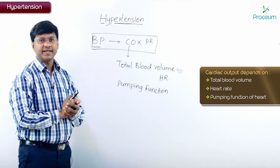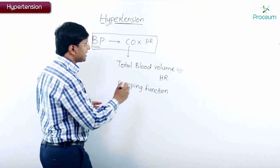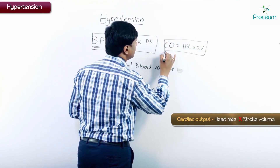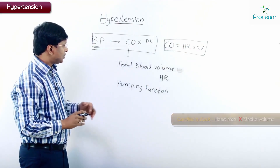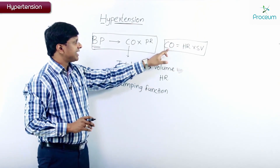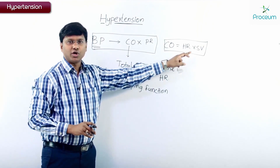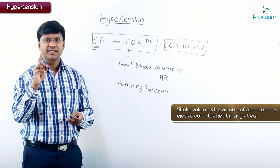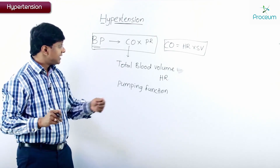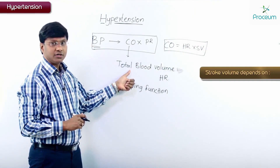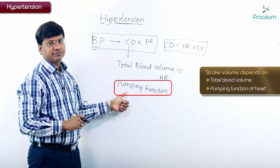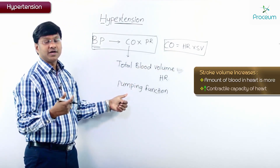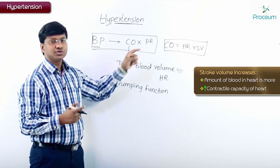These three things decide the cardiac output. Cardiac output is given by the formula: heart rate into stroke volume. Stroke volume is the amount of blood which is ejected out of the heart in a single beat. Stroke volume is dependent on the total blood volume and the pumping function of the heart. If blood volume is more, stroke volume is more; if contractile capacity of the heart is increased, stroke volume also increases.